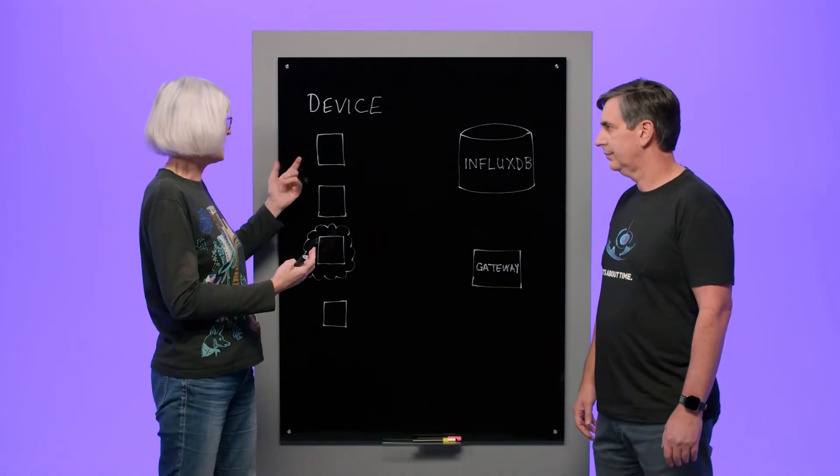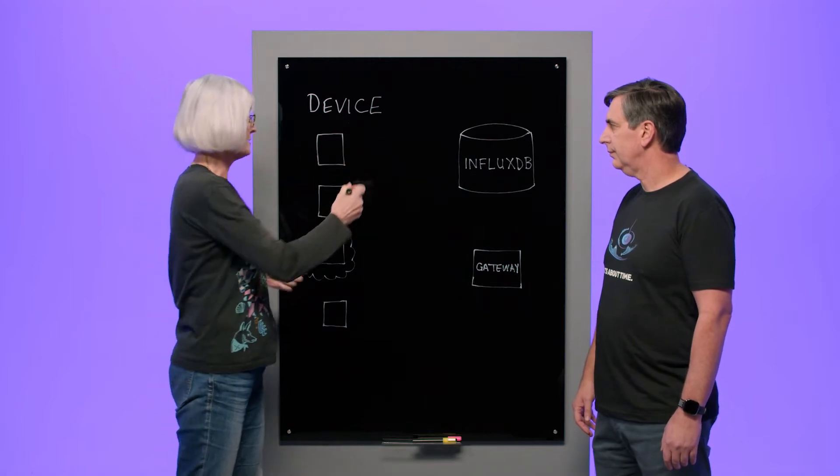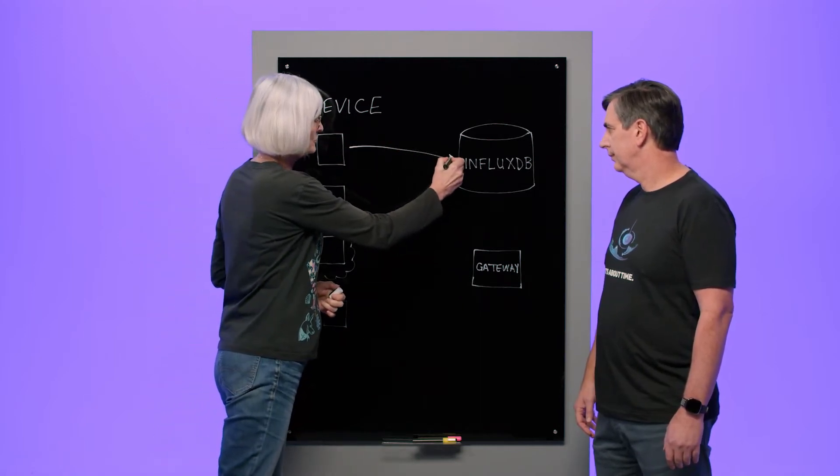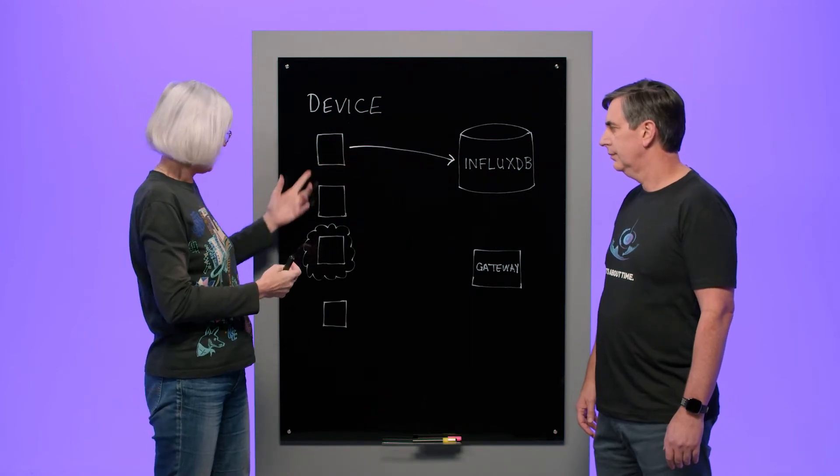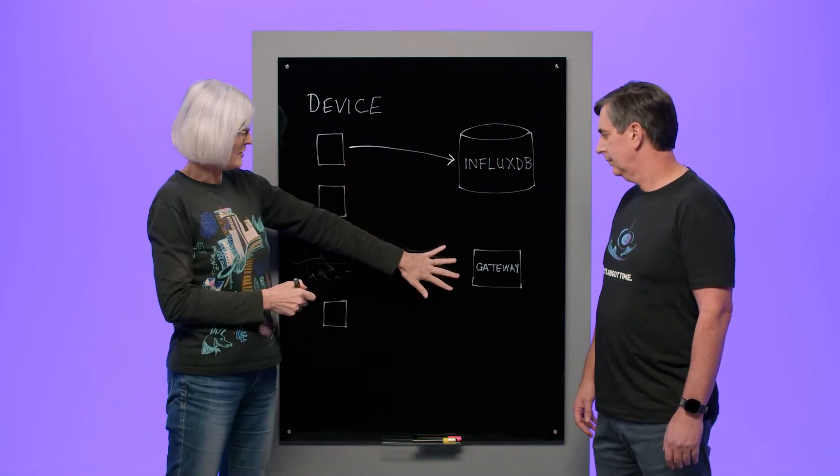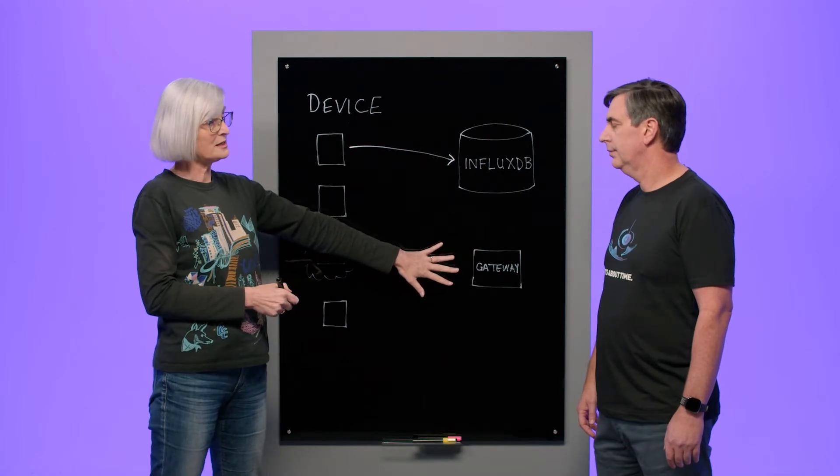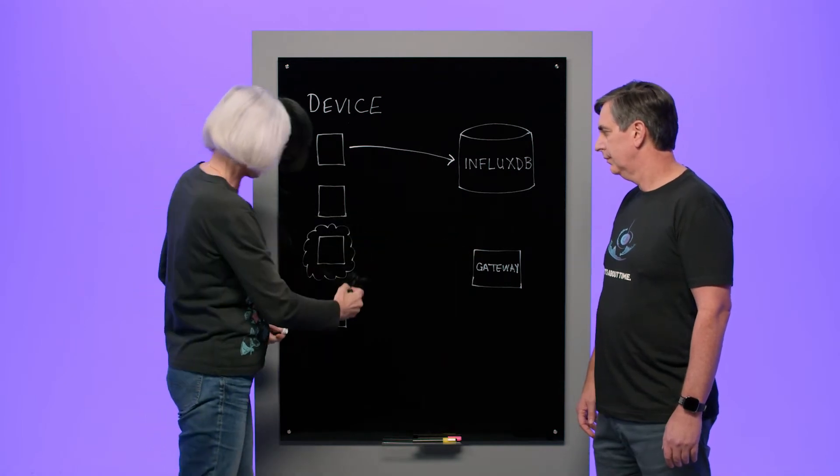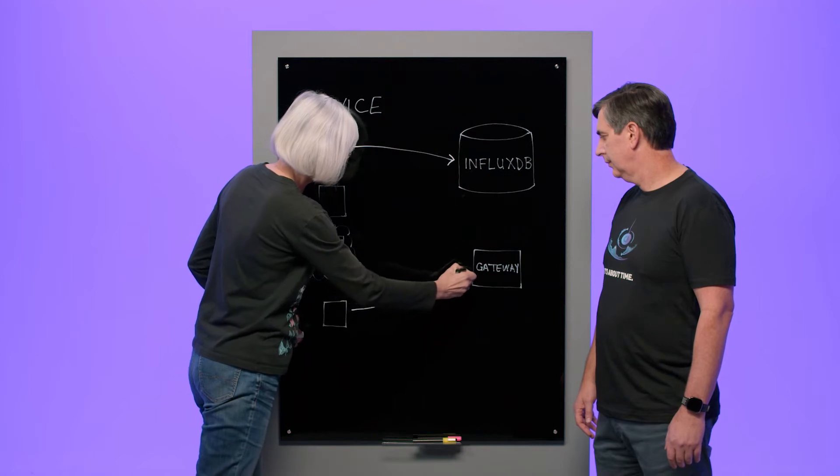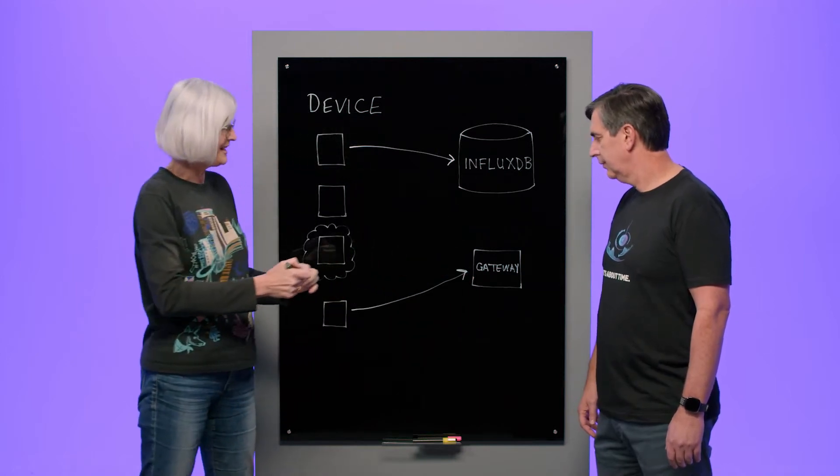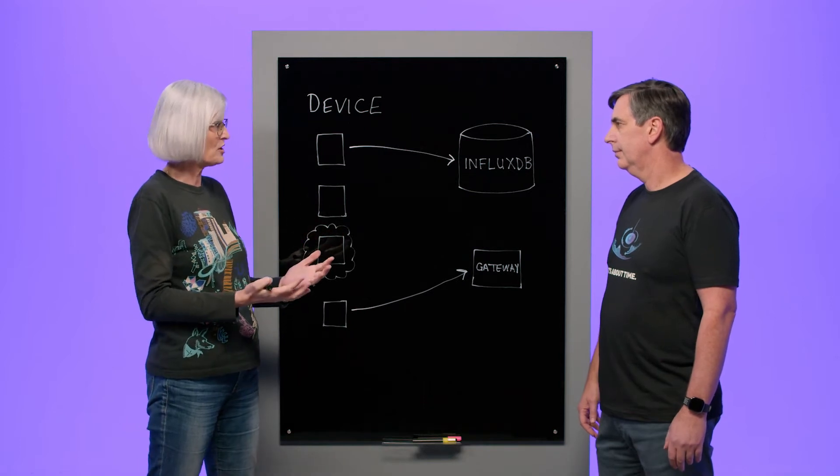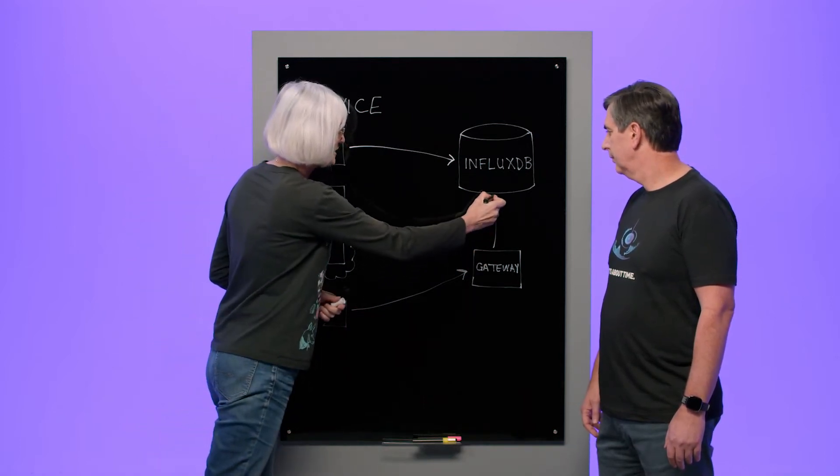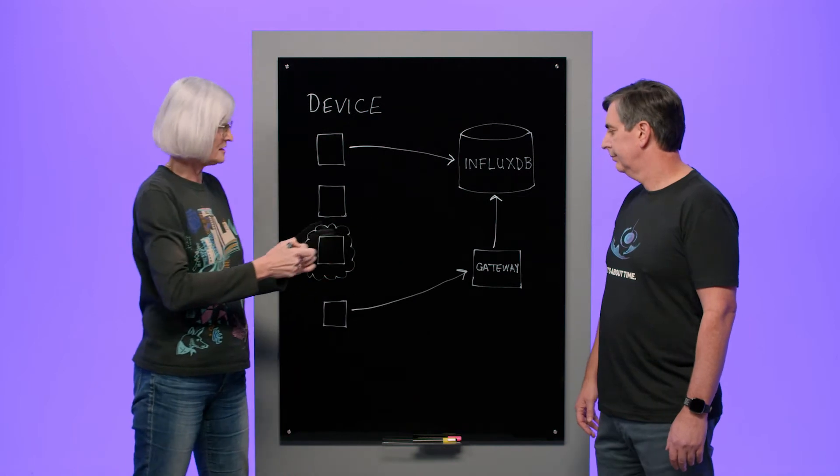And one common case is the device sends data directly to InfluxDB, whether it's in the cloud or open source. That's a common approach. Another approach that developers can often choose is that they build a gateway. So as part of their application, their device may write to their gateway, and then in their gateway, they may do extra annotation, some processing, some filtering, and then it goes from the gateway to InfluxDB.